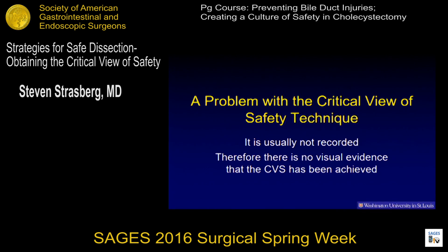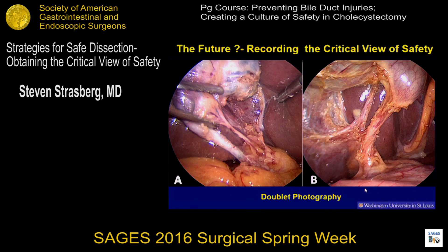There's a problem with the critical view of safety technique: it's not usually recorded, so there's no visual evidence that it's been achieved, and it needs to be recorded. We've shown a way it can be recorded through what we call doublet photography — two pictures, one from the front, one from the back. We've shown that it can be recorded accurately, and we're working toward this becoming part of the operative note, just as gastroenterologists take pictures when they do ERCPs and gastroscopies.